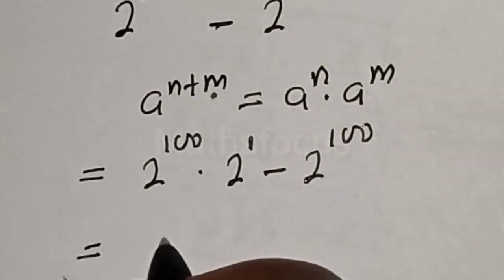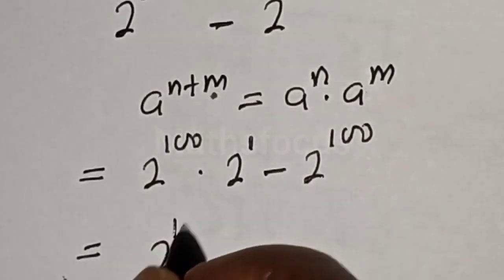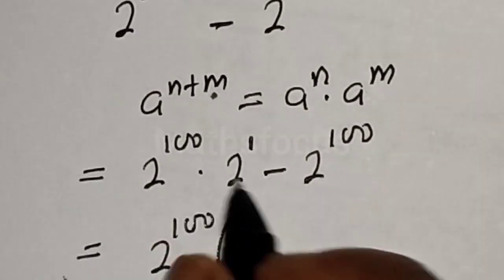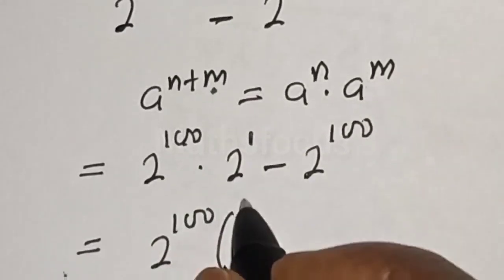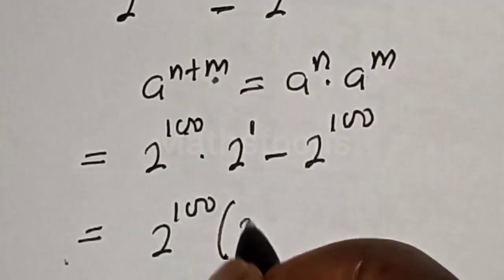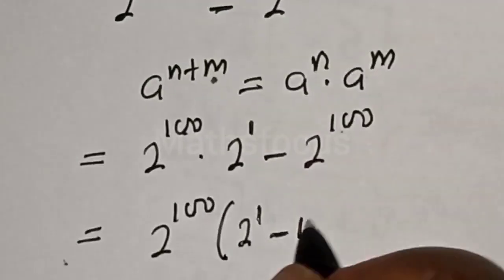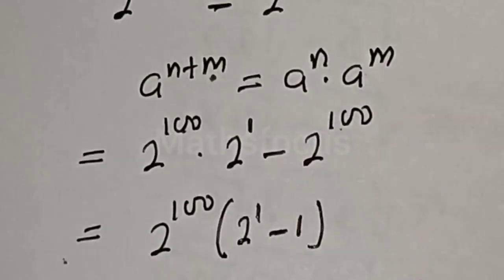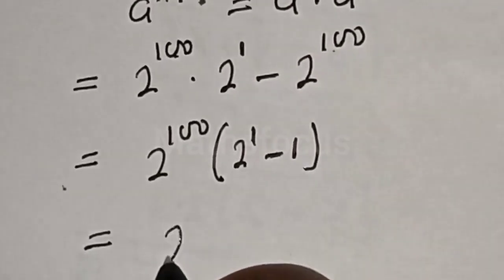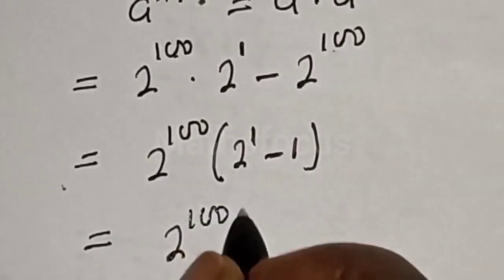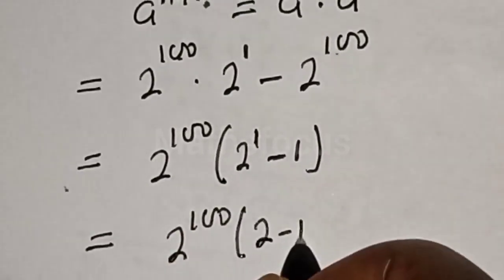2 raised to power 100 is common, so we bring it out as a factor. Inside the bracket we have 2 raised to power 1 minus 1, which gives us 2 raised to power 100 multiplied by bracket 2 minus 1.